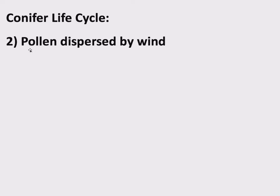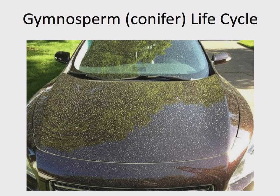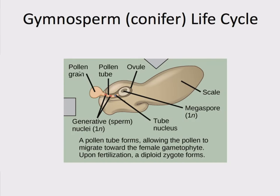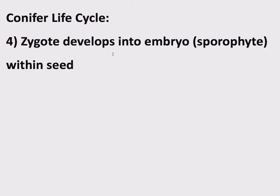From here, pollen — the male gametophyte — is dispersed by wind. The female gametophyte is not going anywhere, but the pollen is dispersed by wind. We know what that looks like living here in Louisiana in certain months of the year. Pollen that manages to reach the female cone — a lot of it will not — develops a pollen tube and delivers sperm to fertilize the egg. There's the pollen grain, the pollen tube, and sperm traveling down the tube to the egg.